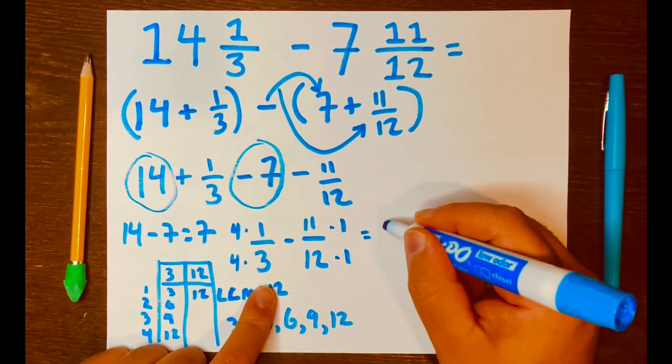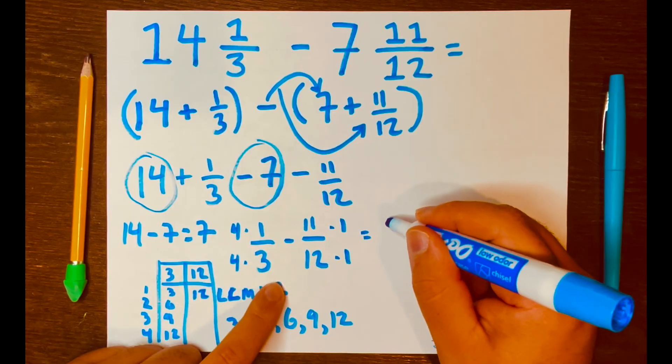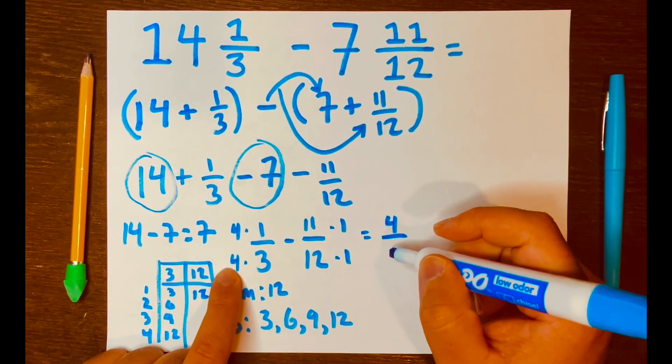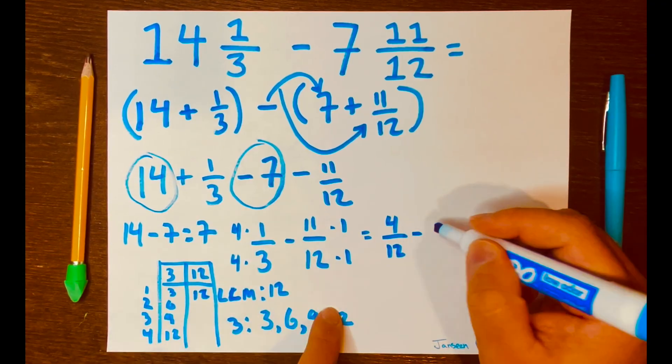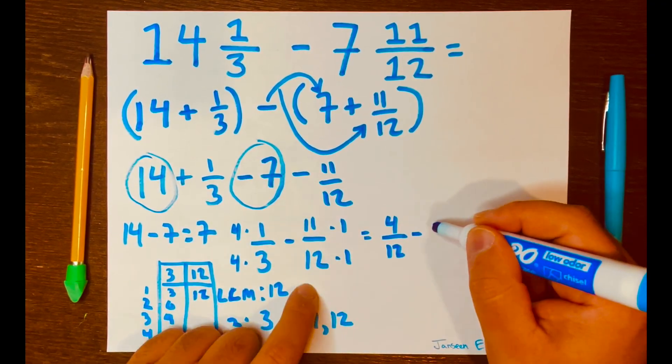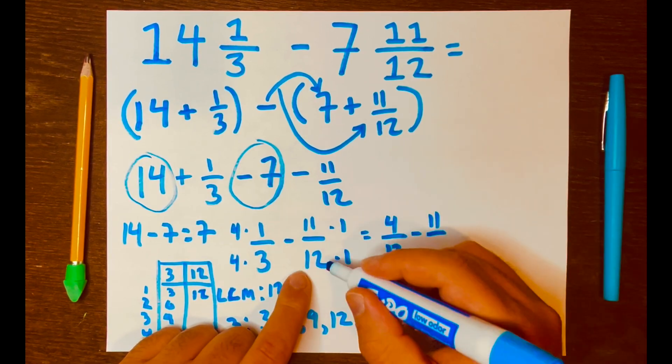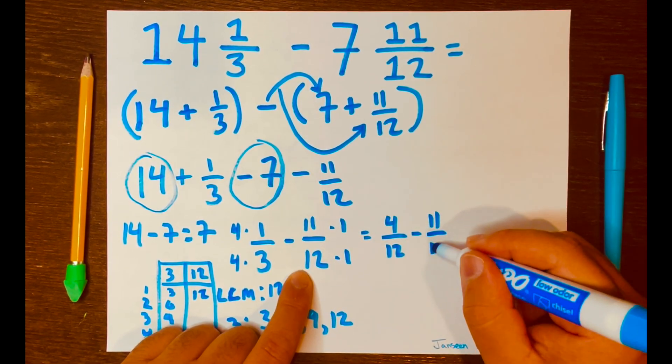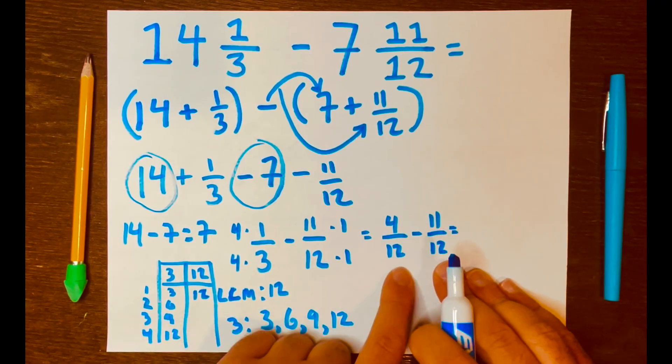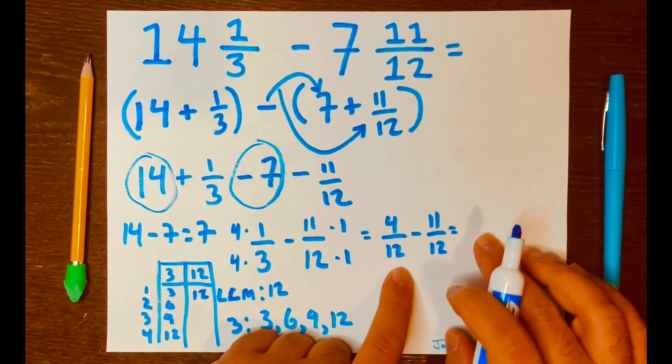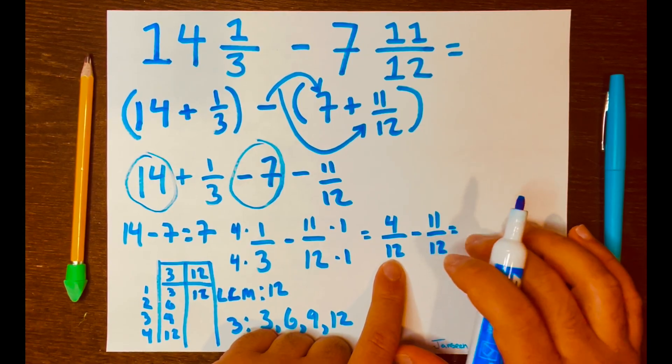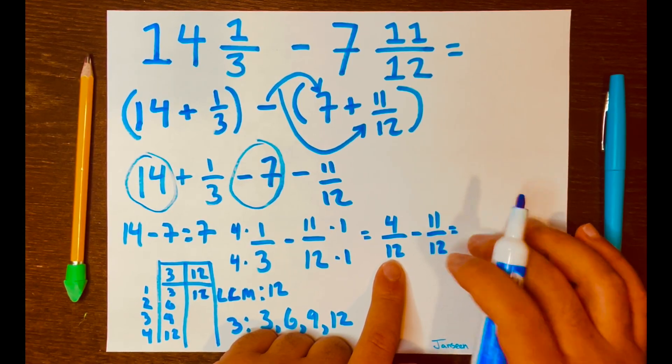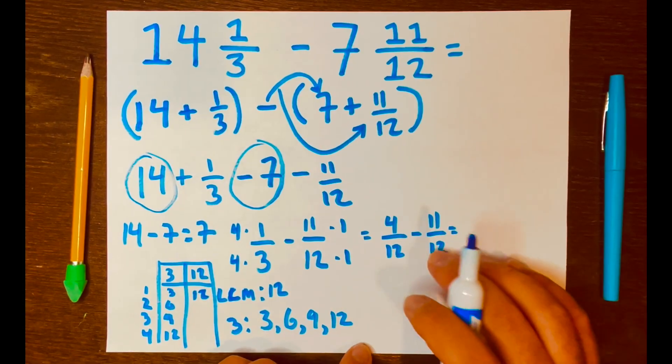So, we got 4 times 1 is 4. 4 times 3 is 12. Minus 11 times 1 is 11. And 12 times 1 is 12, and now we just subtract, but there's something going on here. It's going to give me a negative fraction. So, we need to borrow.